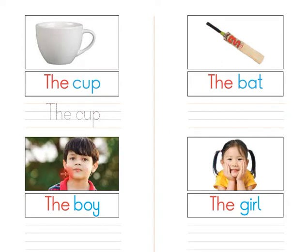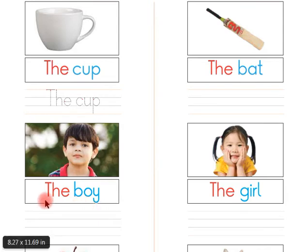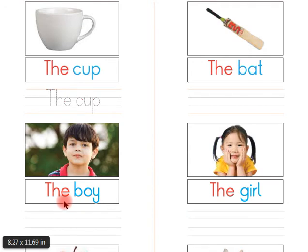Now look at this, children: the boy. Listen again, children: the boy. Listen one more time, children: the boy. Now say with me, children: the boy. Say again, children: the boy. Let's read this, children: the boy. Read again, children: the boy. Children, now you have to write 'the boy' here in between these four lines by yourself.